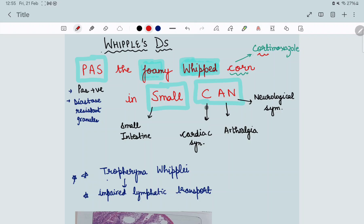Foamy whipped corn - why corn? Because drug of choice is cotrimoxazole. So corn, cotrimoxazole. It helps you to remember it easily. Small - why? Because small intestine is involved. And can - what are the clinical features? Cardiac symptoms, arthralgia, and neurological symptoms are present.